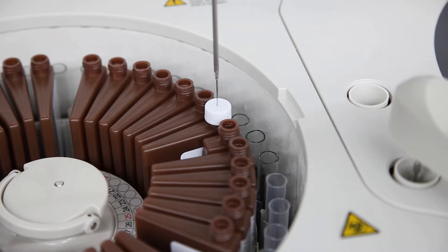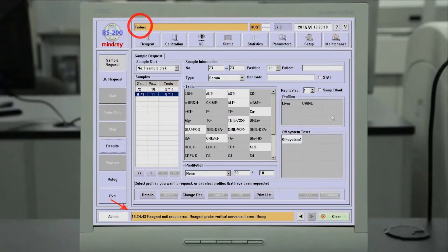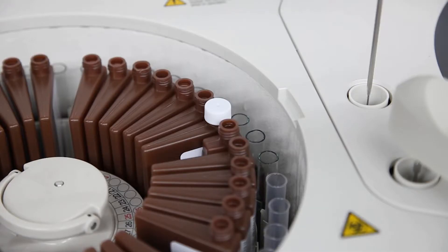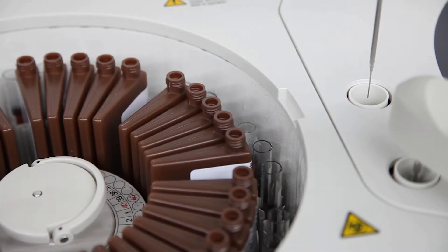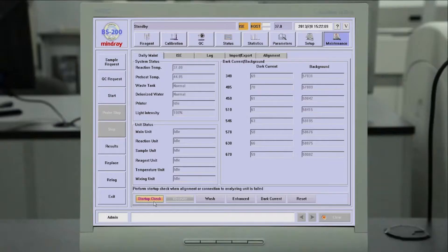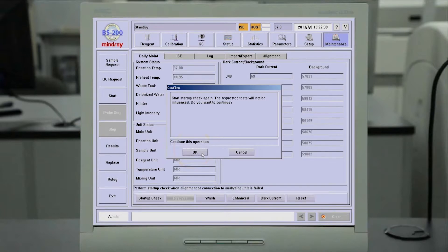Should a probe collision ever happen, the analyzer gives an alarm and stops after trying three times. The operator simply removes the obstruction or resets the instrument with a simple one-touch recovery button.